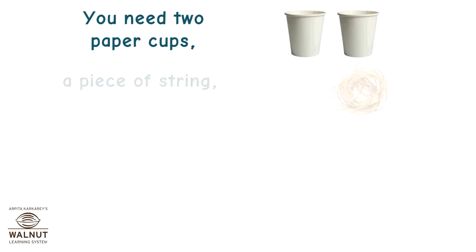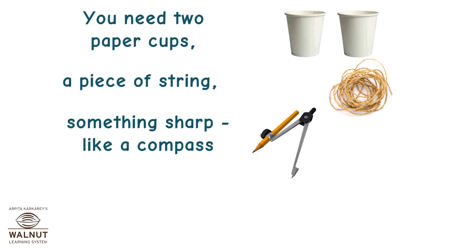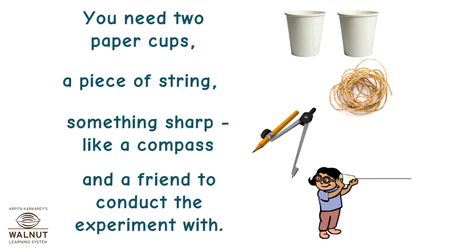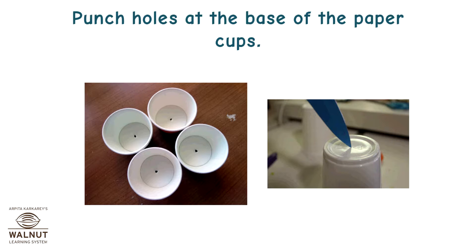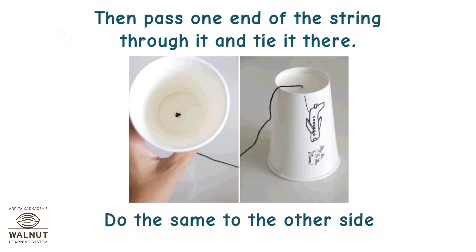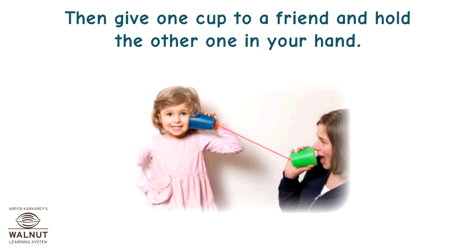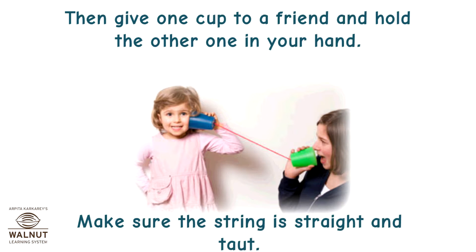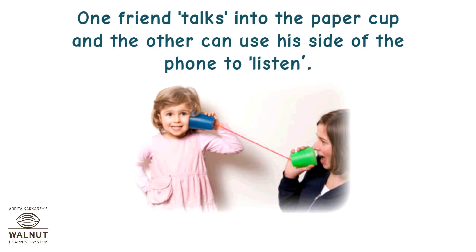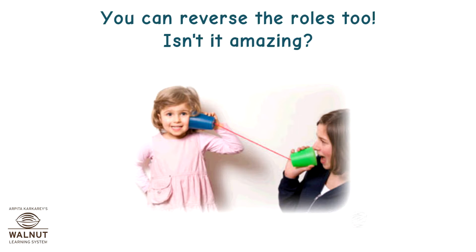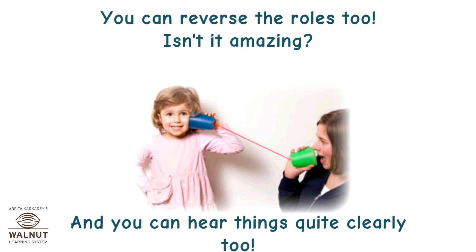Here is how to make one real quick. You need two paper cups, a piece of string, something sharp like a compass, and a friend to conduct the experiment with. Punch holes at the base of the paper cups. Then pass one end of the string through it and tie it there. Do the same to the other side. Then give one cup to a friend and hold the other one in your hand. Make sure the string is straight and taut. One friend talks into the paper cup and the other uses his side of the phone to listen. You can reverse the roles too. Isn't it amazing? And you can hear things quite clearly too.